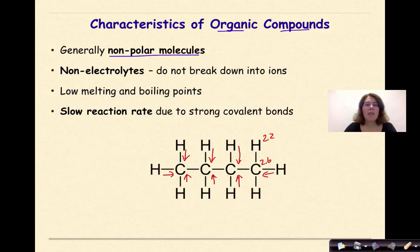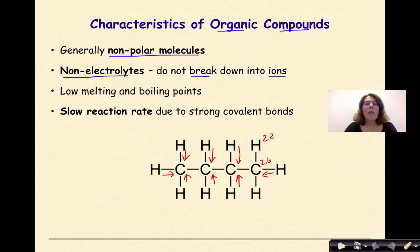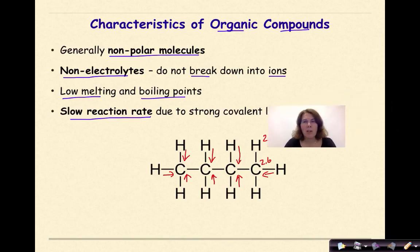Organic compounds are also classified as non-electrolytes — in other words, they're not going to break down into ions. So again, looking at the image below, this is not going to break down into a positive ion and a negative ion. Organic compounds typically have low melting and boiling points, and they have a slow reaction rate due to the strong covalent bonds that hold the molecules together.